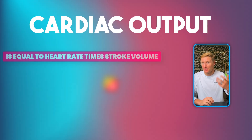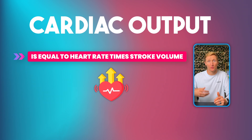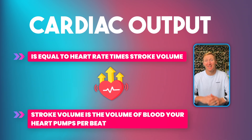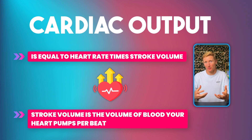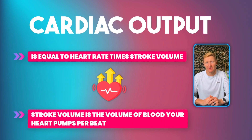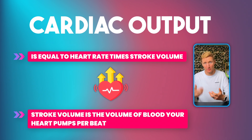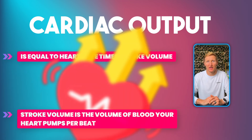I need to introduce the cardiac output equation. It's a pretty simple equation, I'll break it down for you now. Cardiac output (CO) is equal to heart rate times stroke volume. Heart rate you know and love. Stroke volume is simply the volume of blood your heart pumps per beat. When we combine those together we get cardiac output in litres per minute — the amount of blood pumped per minute by your heart.